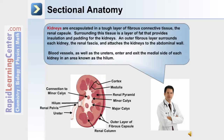The kidneys are encapsulated in a tough layer of fibrous connective tissue. Surrounding this tissue is a layer of fat that provides insulation and padding for these organs. An outer fibrous layer surrounds each kidney, the renal fascia, and attaches the kidneys to the abdominal wall. Blood vessels as well as the ureters enter and exit the medial side of each kidney in an area known as the hilum.